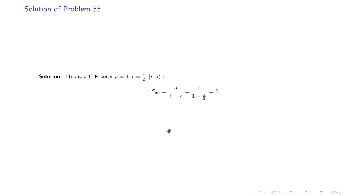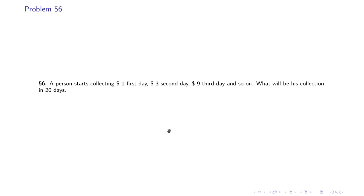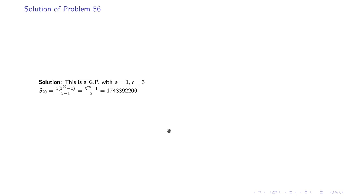Problem 56: A person starts collecting $1 on the first day, $3 on the second day, $9 on the third day, and so on. What will be their total collection in 20 days? This is a GP with a = 1 and r = 3. The sum of 20 terms is 1 × (3^20 − 1) / (3 − 1) = (3^20 − 1) / 2, which is a very large number — specifically 1,743,392,200.